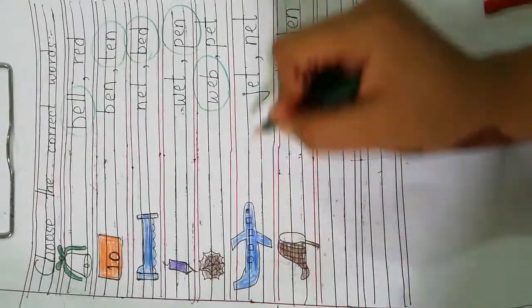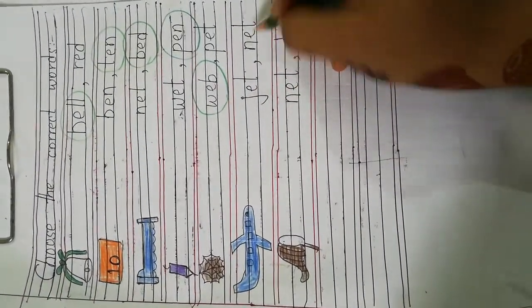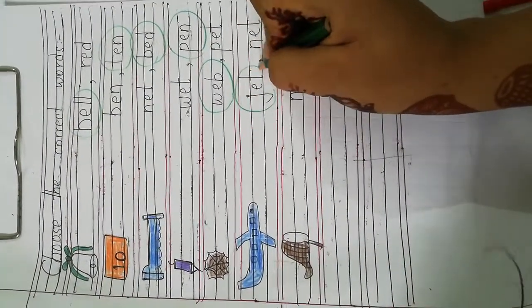Next one is jet. Jet. Net. N E T net. So, this is jet. So, we will circle jet. J E T jet.